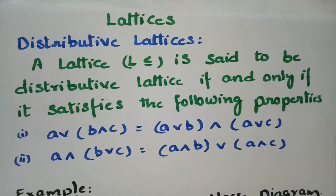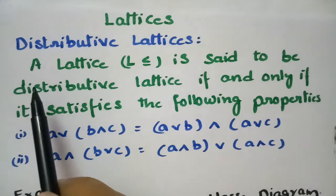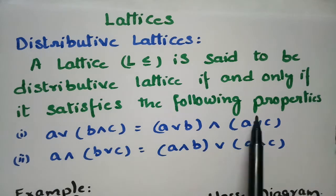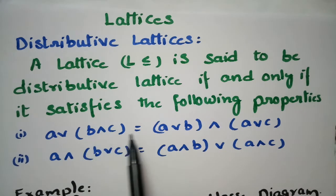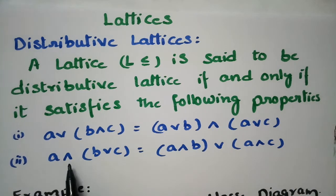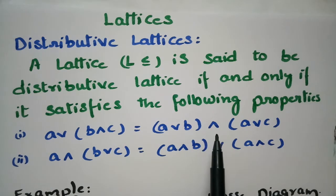In today's video I am going to explain what is a distributive lattice. This topic is related to discrete mathematics. A lattice L (≤) is said to be a distributive lattice if and only if it satisfies the following two properties. The first property is: A join (B meet C) = (A join B) meet (A join C). The second property is: A meet (B join C) = (A meet B) join (A meet C). If both properties hold, we say the given lattice is a distributive lattice.